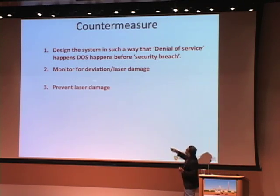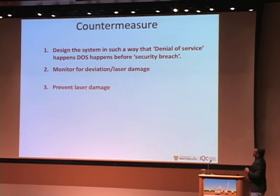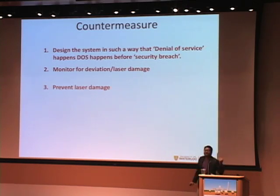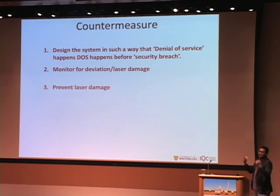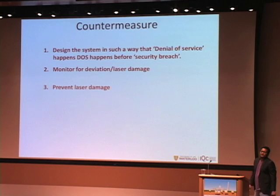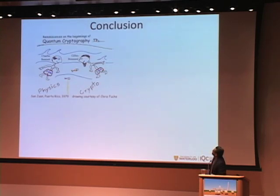Two other countermeasures are: always monitoring for deviation, and monitoring for laser damage — though these require complicated work and more future research. A third countermeasure is to prevent laser damage entirely. In electrical circuits, a fuse burns when excess current flows. Similarly, we could manufacture a 'fiber fuse': if extra light passes through it above a certain threshold, it burns down. Placing this in front of the system could prevent any laser damage attack.